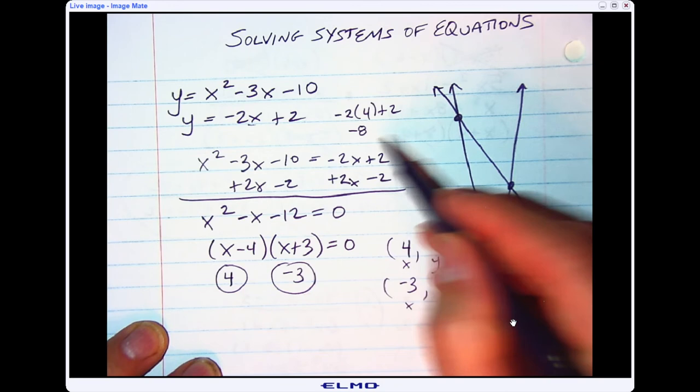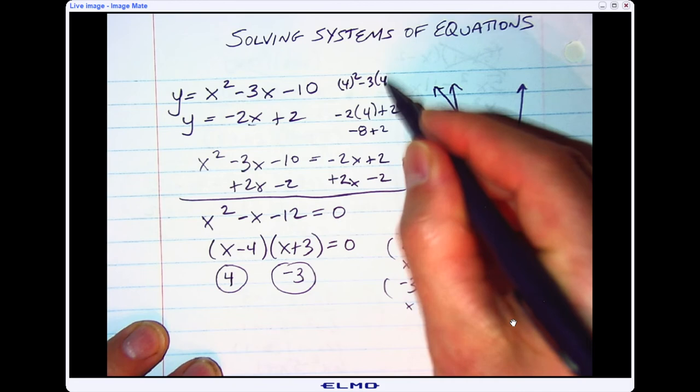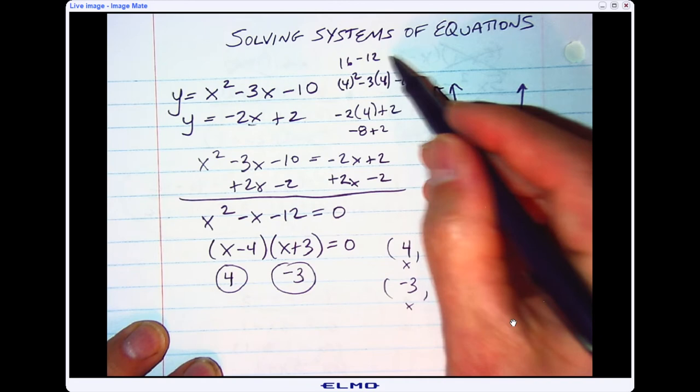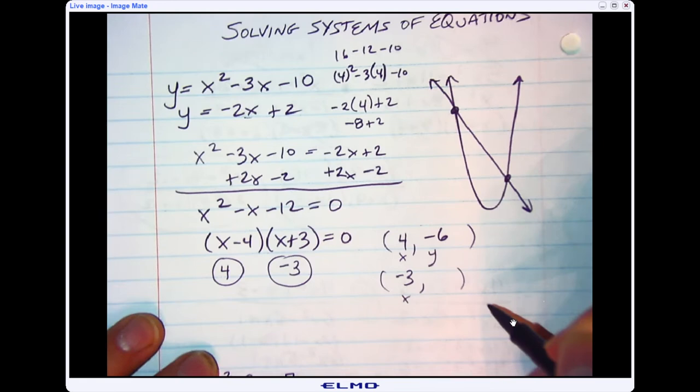Now I can check the same thing on the top. If I put in 4, 4 squared minus 3 times 4. So 4 squared is 16, negative 3 times 4 is minus 12. So 16 minus 12 is 4, and 4 minus 10 is negative 6. It works for both. So we know that's the solution of a system because it makes both equations true.